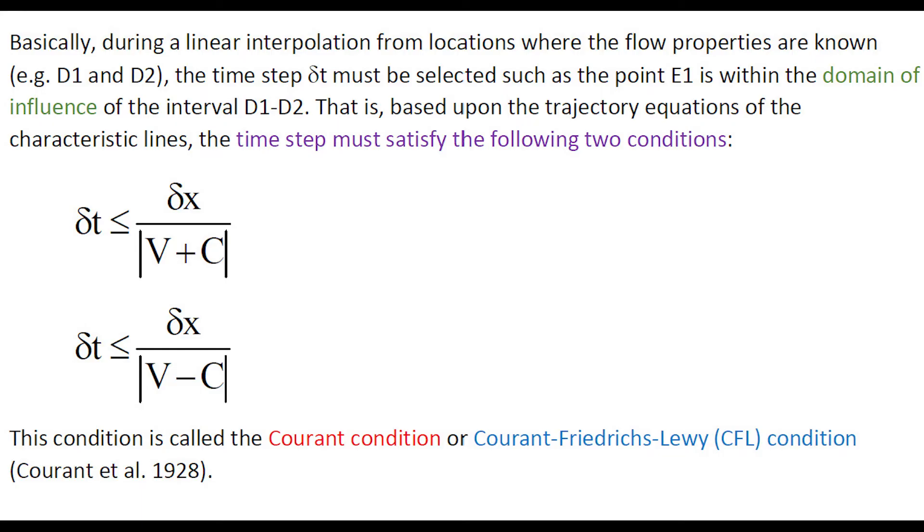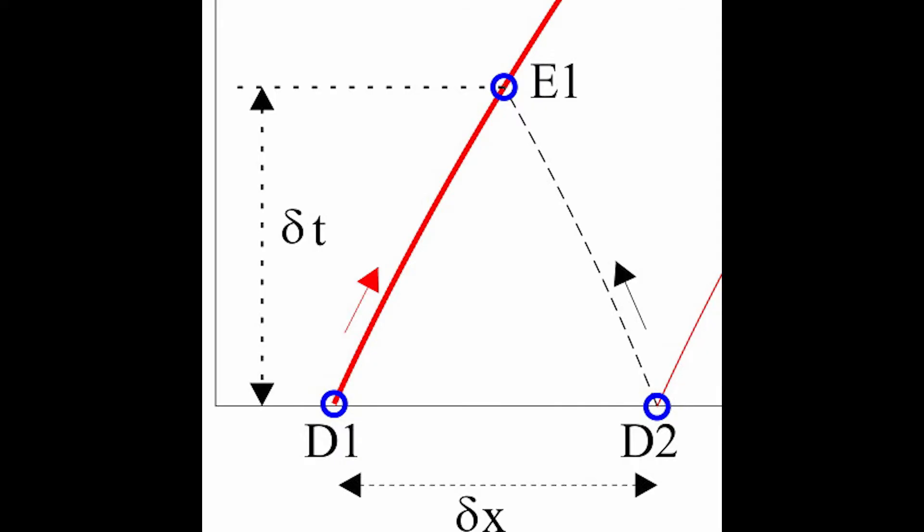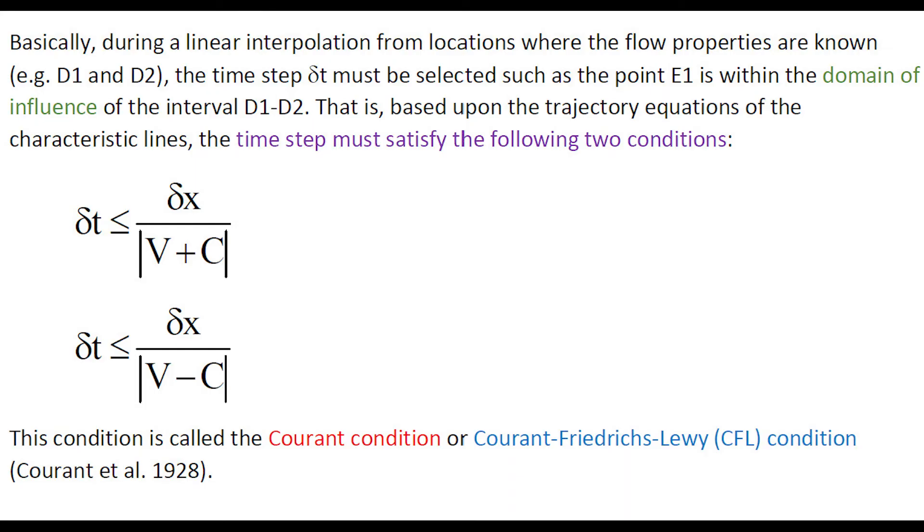Basically, during a linear interpolation from locations where the flow properties are known, for example D1 and D2, the time step delta t must be selected such that the point E1 is within the domain of influence of the interval D1-D2. That is, based upon the trajectory equations of the characteristic lines, the time step must satisfy the following two equations, called the Courant condition or CFL condition.